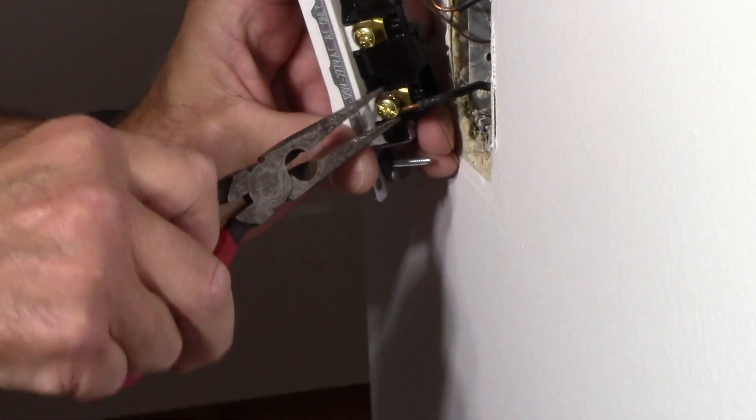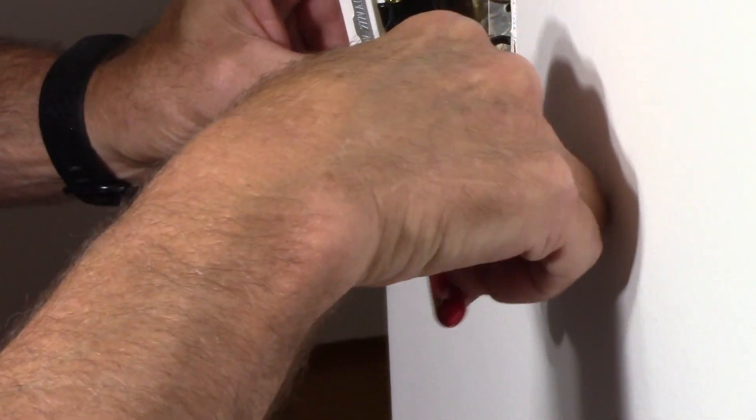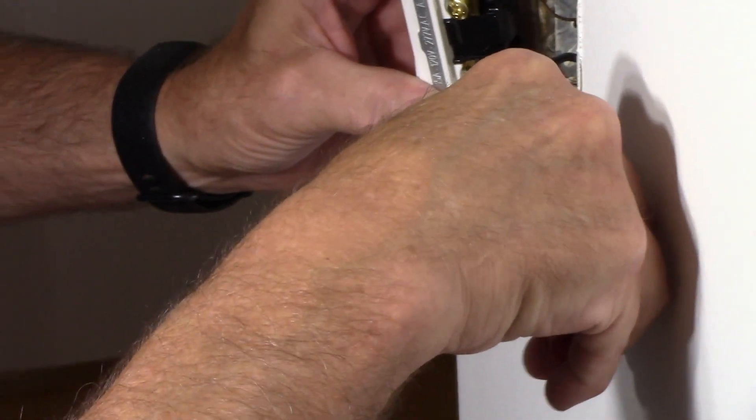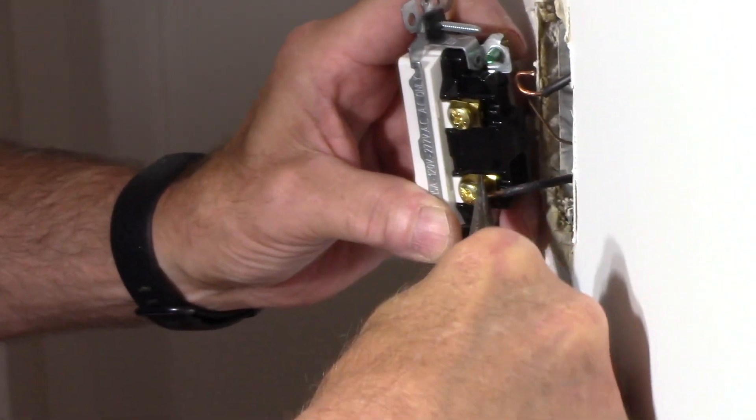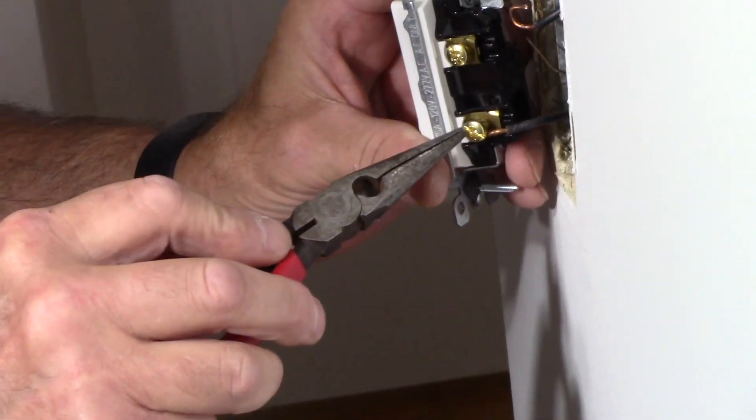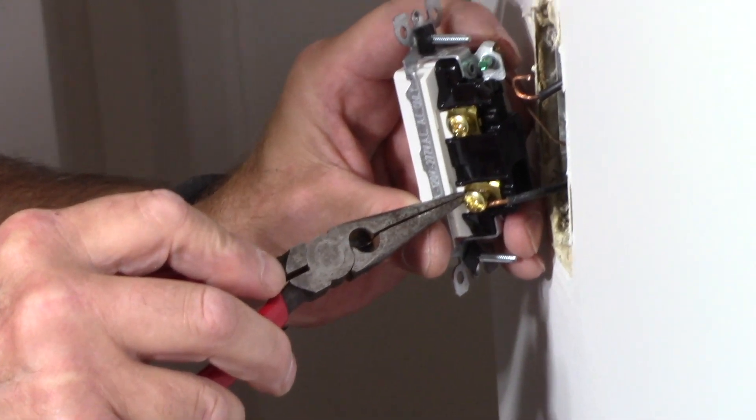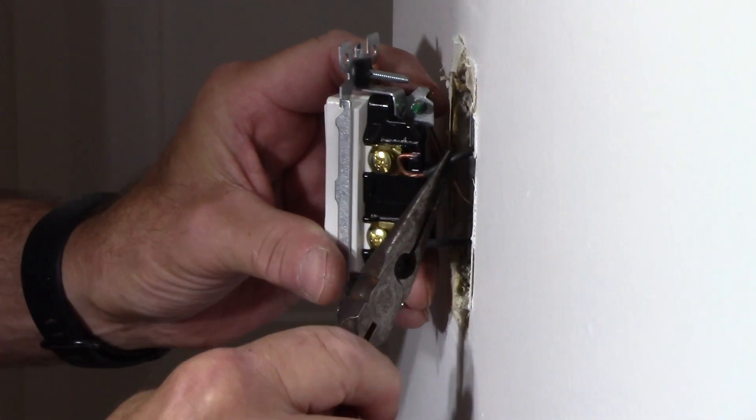And we're just going to crimp that wire a little bit tighter. I'll tighten it and then I'll show you what I mean. See how the wire is nice and tight around here? And we'll do the exact same thing on this one here.